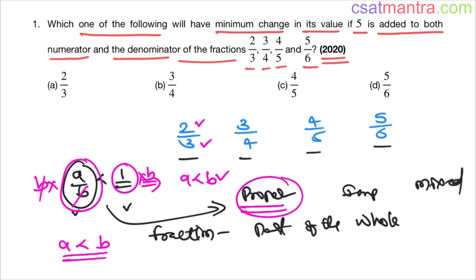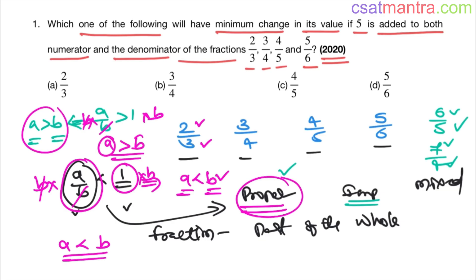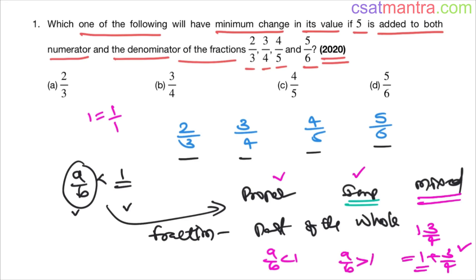An improper fraction is the opposite: a/b > 1, which means a > b — numerator greater than denominator — for example 6/5 or 7/4. A mixed fraction is a combination of a whole number and a proper fraction, like 1¾, which equals 1 + 3/4. Every improper fraction can be represented as a mixed fraction.